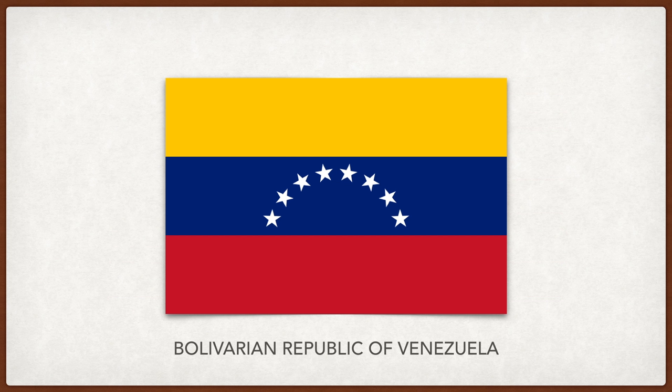Venezuela. The yellow band represents natural wealth, the red courage, and blue the oceans. Some attribute the ocean as a symbol of independence from Spain, because of how the ocean separates Spain from the Americas. In 2006, an eighth star was added by Hugo Chavez, representing the eight historical regions of Venezuela.